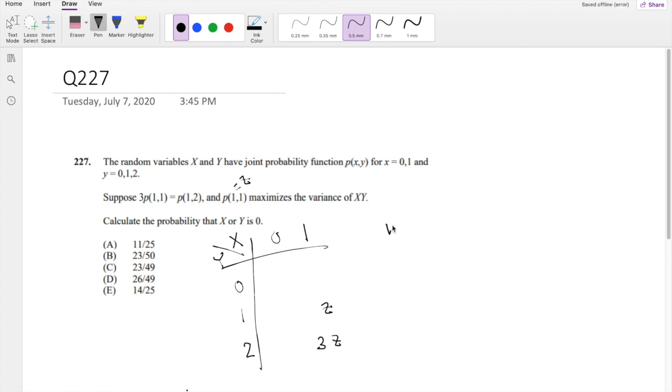And we know that the variance of XY is, as always, our favorite formula: XY, this whole thing, the second moment, minus the XY, the whole thing, squared.